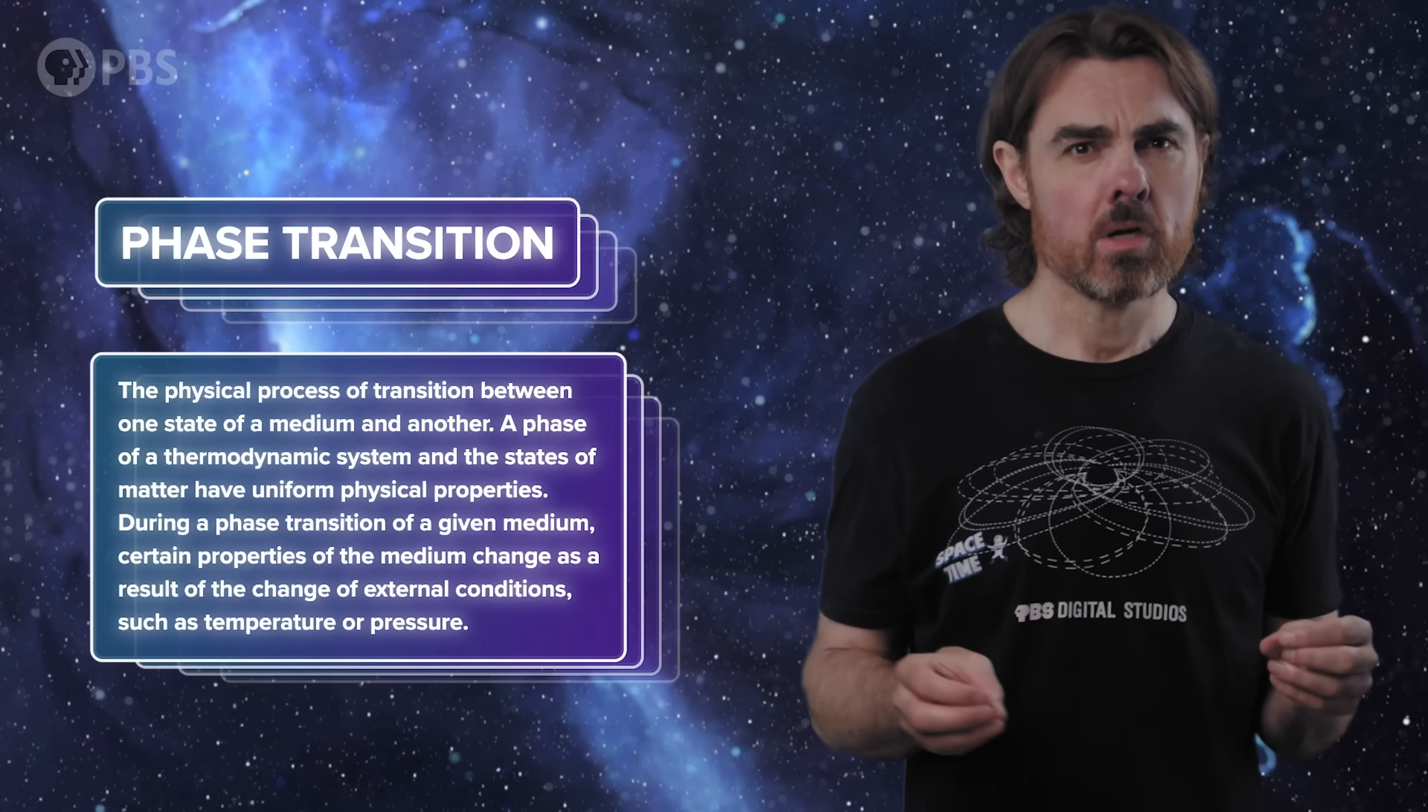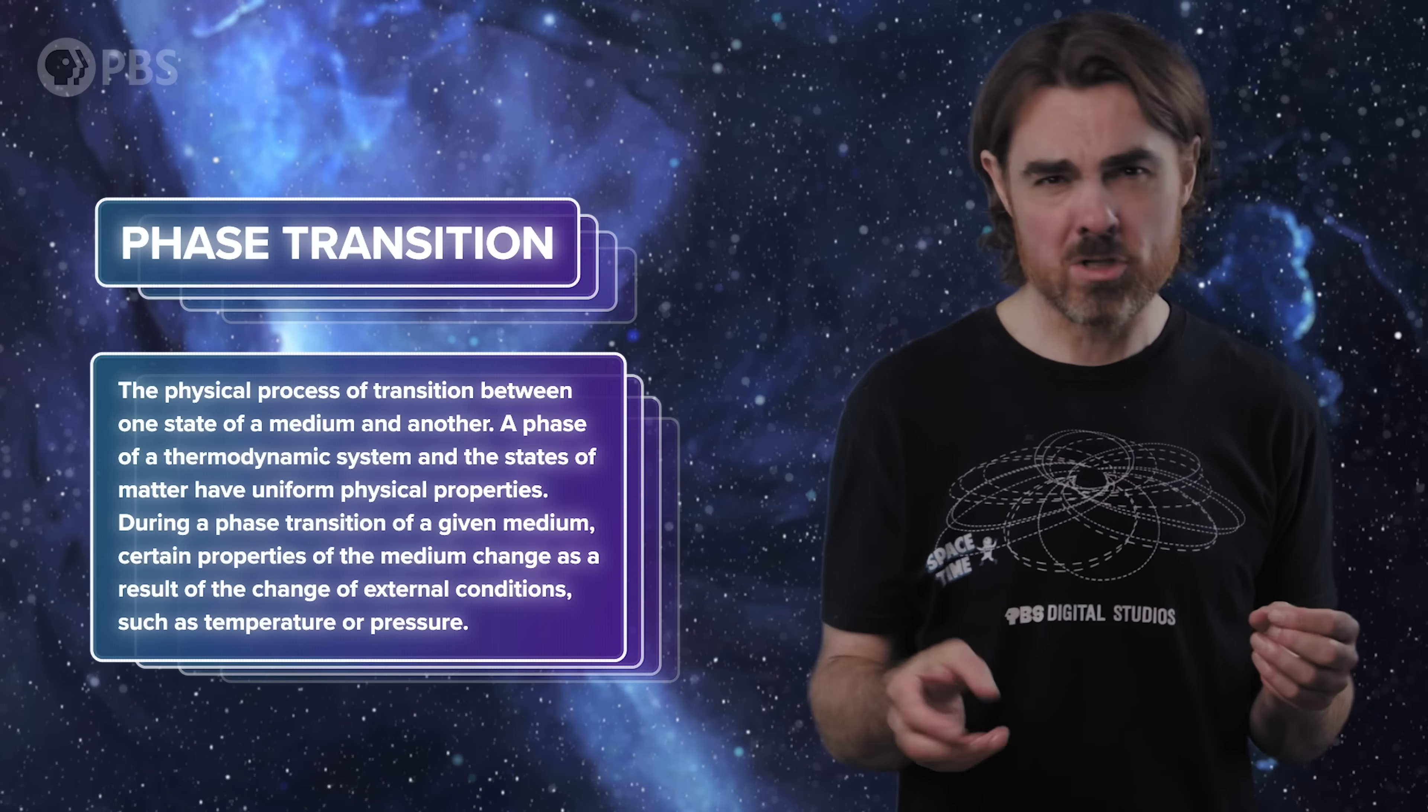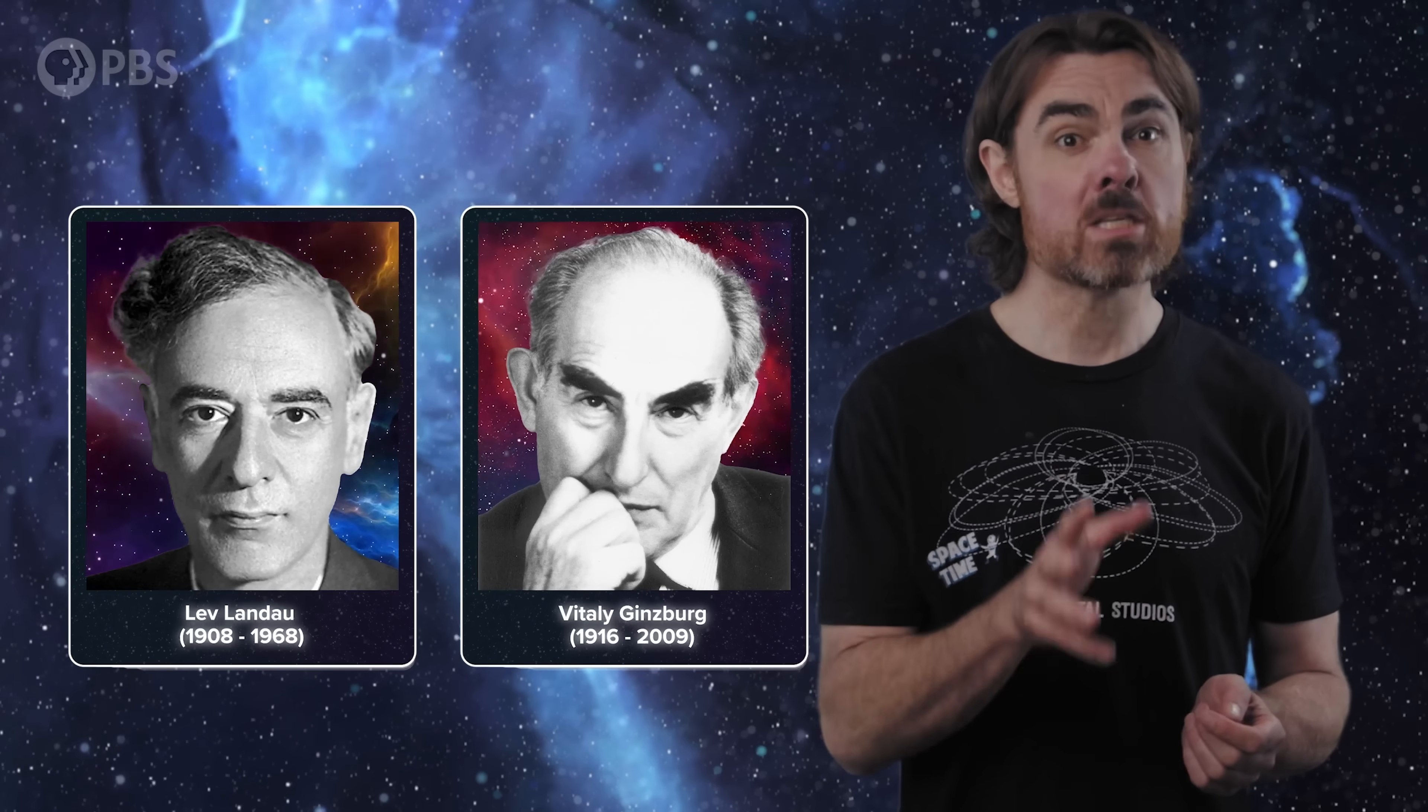So the next advance was made by putting time back in. In particular, by thinking about the transition into and out of the superconducting state. That change is what we call a phase transition, closely related to the more familiar state transitions between solids, liquids and gases. Russian physicists Vitaly Ginzburg and Lev Landau realized that there are certain general rules that all systems undergoing a phase transition have to obey, even if we still don't know the actual nature of the post-transition state. So in 1950, still not knowing what caused superconductivity, we got the Ginzburg-Landau theory.